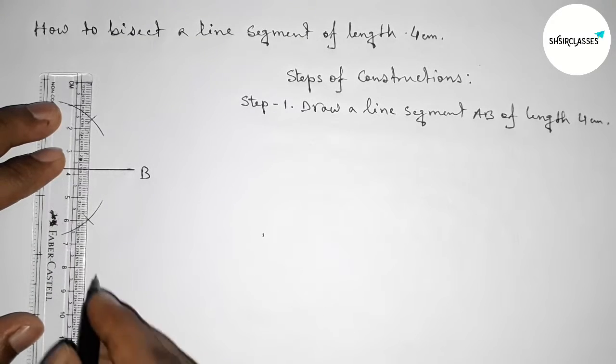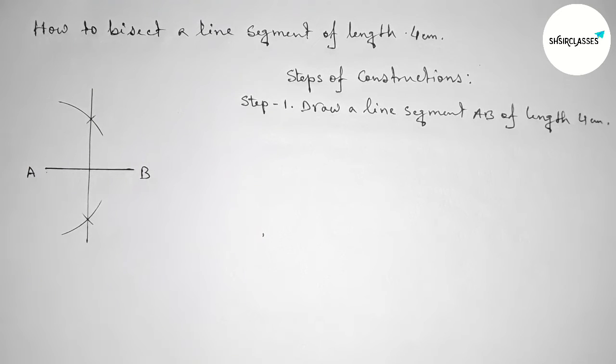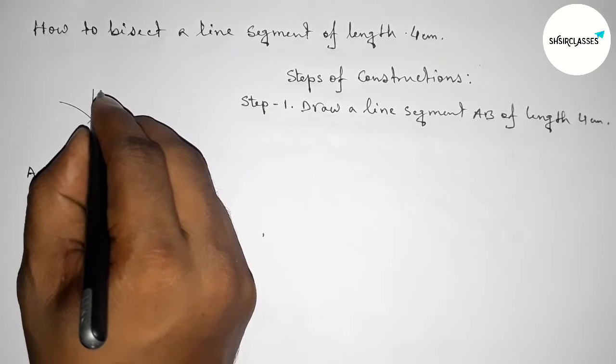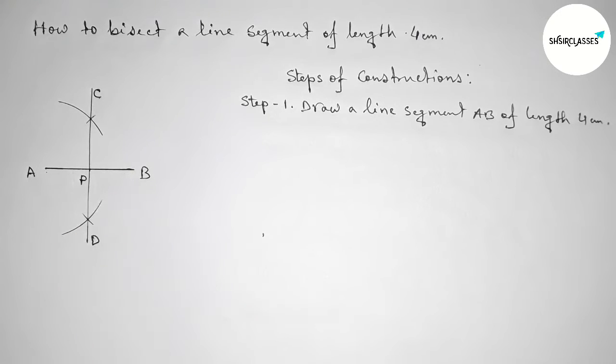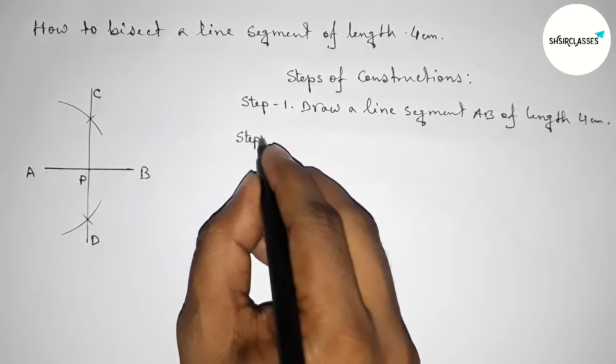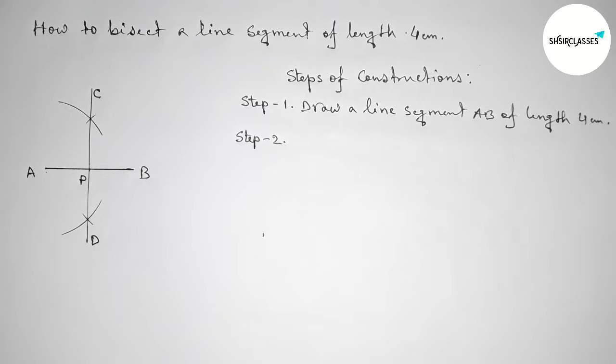curves intersect at two points. Now joining this line and taking here C and here D. So the line CD bisect the line AB at the point P. So step number two,